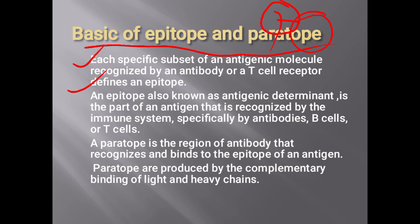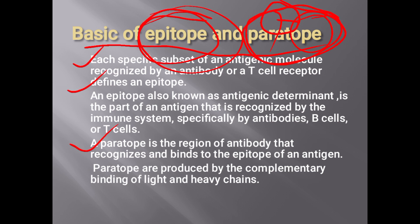A paratope is the region of the antibody that recognizes and binds to the epitope on the antigen. In summary: the paratope is a part of the antibody, and the epitope is a part of the antigen. Both have binding sites, and when an antigen and antibody interact, they do so through their respective epitope and paratope — these are the sites where they interact with each other.